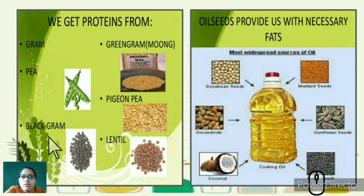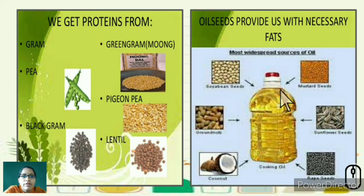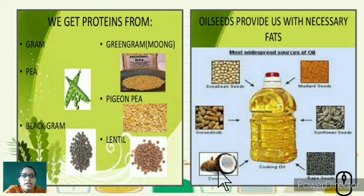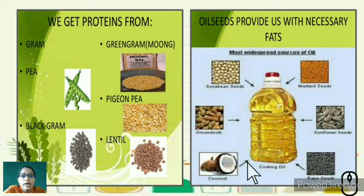We also require a certain amount of fat, which is stored under our skin and used for everyday metabolic activities. Fats come from oil seeds used in cooking: soya bean gives soya oil, mustard seeds give mustard oil, groundnuts give groundnut oil, sunflower seeds give sunflower oil — nowadays called refined oil — and coconut gives coconut oil.